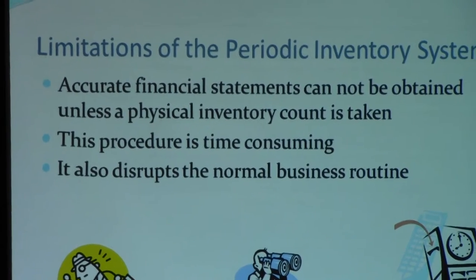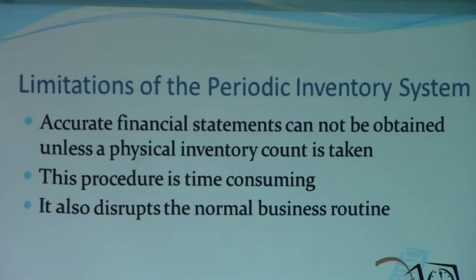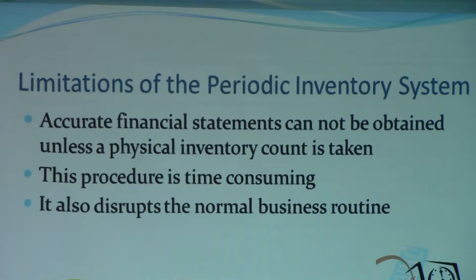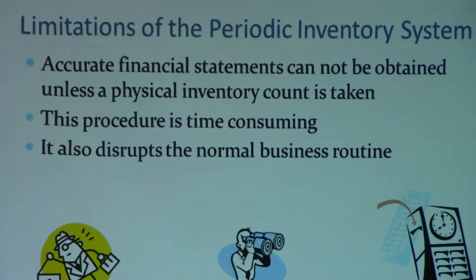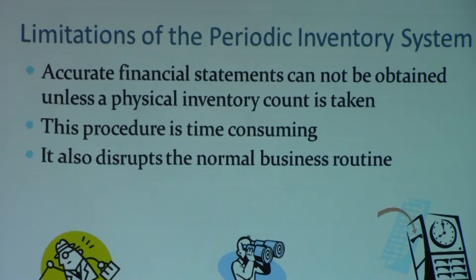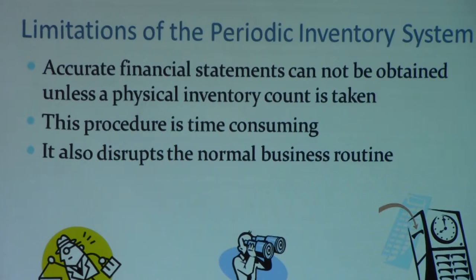Now, the limitations of the periodic inventory system. There are two types of inventory systems — periodic and perpetual — and we've been focusing on periodic. Limitation number one: you will not have an accurate set of financial statements during the year, because you are not doing any journal entries for COGS or anything else during the year, except recording purchases. This procedure is also very time-consuming because at the end of the year you have to physically count remaining inventory. It also disrupts your normal business routine — you have to allocate certain staff members and may have to physically close the business.